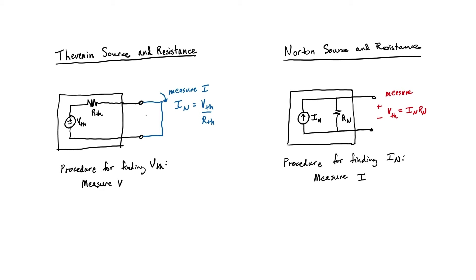You can see that these two equations are the same. Therefore, it's possible to transform a Thevenin equivalent source into a Norton equivalent source.